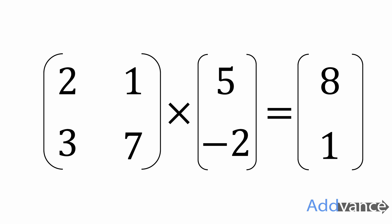To do that, just focus on the pattern that I used. To get the top number, I did the top row multiplied by the first column: 2 times 5 plus 1 times minus 2. To get the bottom number, to get 1, I did 3 times 5 plus 7 times minus 2. The bottom row multiplied by the column. And that's how you multiply a matrix by a vector.